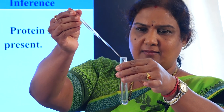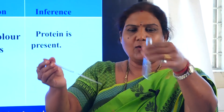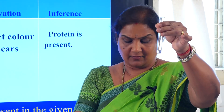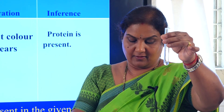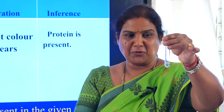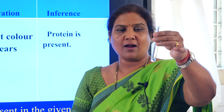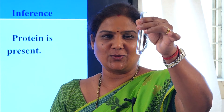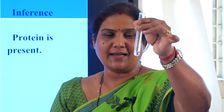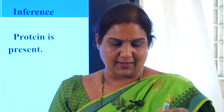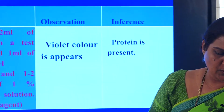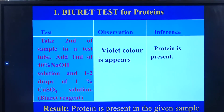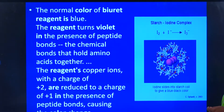We note the change: a very light violet colour appears. Do not add biuret reagent excessively — it's 1 to 2 drops that you are supposed to add, and it indicates the violet colour. The solution changes to violet colour indicating the presence of protein. In the observation you write: violet colour appears. Inference: protein is present.